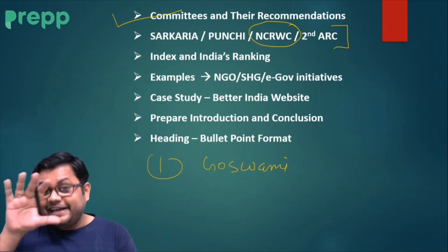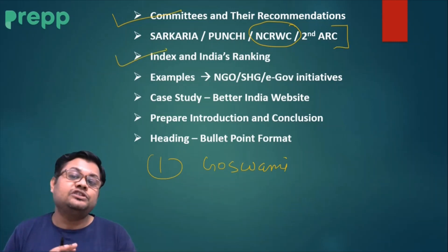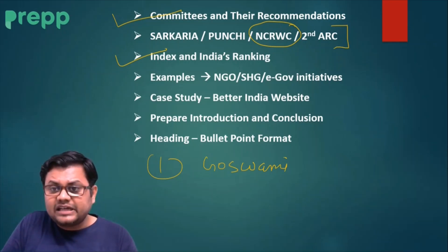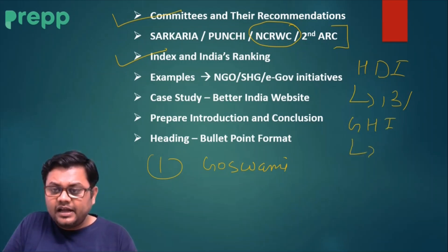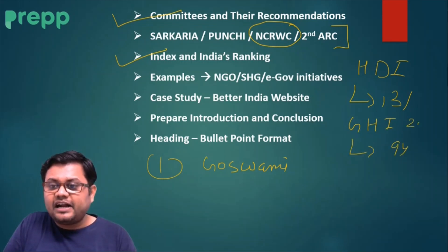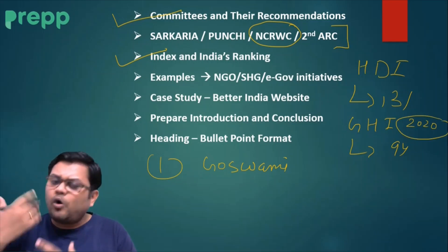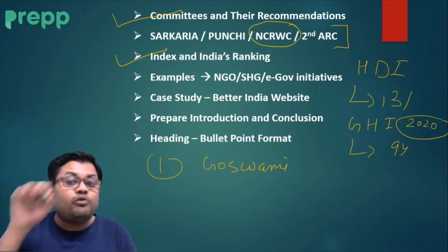You should also know about important indices and India's ranking in them — compile these on an A4 sheet. For example, India's ranking in the Human Development Index is 131, and in the Global Hunger Index it is 94 (2020 data). When a question on poverty, welfare measures, or development comes, this information needs to be incorporated in your answer.